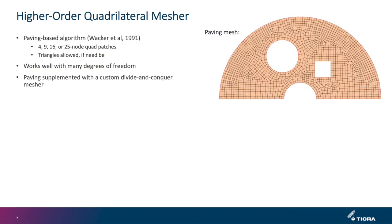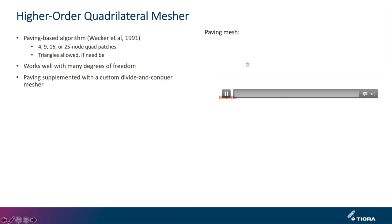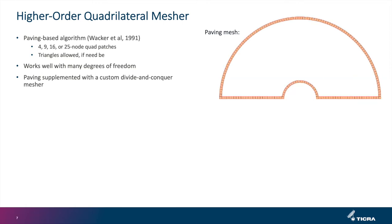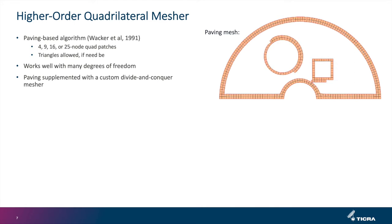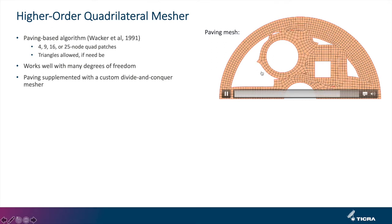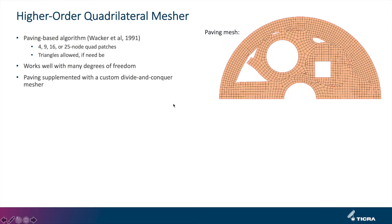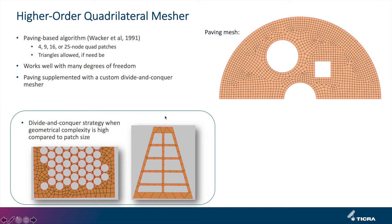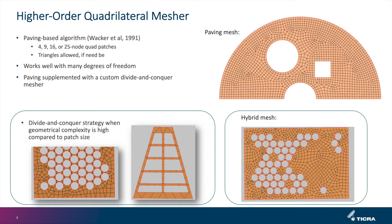We had to develop our own mesher based on the paving algorithm by Wagger — you can see how it paves the boundaries. That works well when you have many degrees of freedom, but if you have very few you need to supplement it. We developed a divide and conquer strategy for high geometrical complexity cases, and also a hybrid approach for cases with both many degrees of freedom and geometrical complexity.